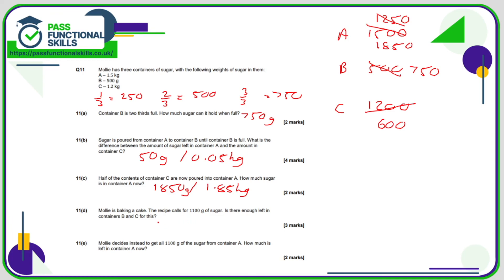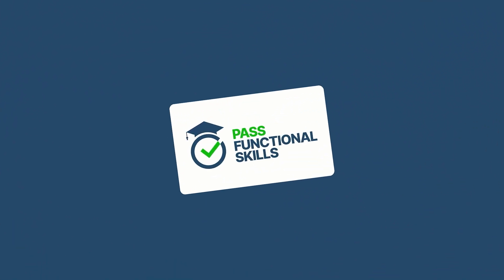Molly's baking a cake. The recipe calls for 1,100 grams of sugar. Is there enough left in containers B and C for this? Well, in container B, we've got 750. And in container C, we have 600. Again, we can use a calculator for this. So 600 plus 750 comes to a total of 1,350. So yes, she's got more than enough sugar for that. She's got an extra 250 grams. And finally, Molly decides instead to get all 1,100 grams of the sugar from container A. So container A contains 1,850. So all we need to do is subtract the 1,100 from it. Again, use a calculator. But it's easy enough just to do it kind of almost in your head, really. But it's totally acceptable, of course, to use a calculator. So the answer is 750 grams.